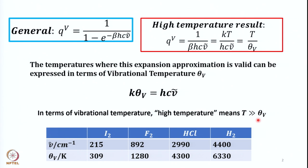Some typical values of vibrational temperatures are listed in a table, showing the wave number in cm⁻¹ and the corresponding vibrational temperature. For iodine, a linear diatomic molecule with 3n−5 = 1 mode of vibration at 215 cm⁻¹, you get a vibrational temperature of 309 K. For fluorine, also a linear diatomic with 1 mode at 892 cm⁻¹, the characteristic vibrational temperature is 1280 K.